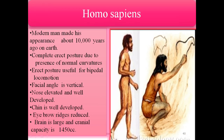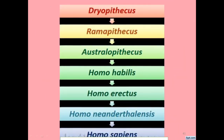Next is Homo sapiens, the modern man. It is found in Africa. It shows erect posture, and its cranial capacity is about 1450 cc. It developed distinct facial features, developed cave art about 18,000 years ago. The facial angle is vertical, the nose is elevated, the chin is well-developed, eyebrows are arched, and the cranial capacity is about 1450 cc.